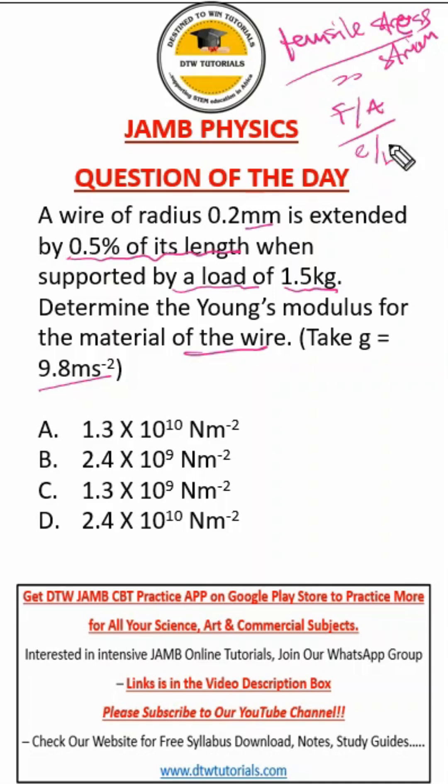So Young's modulus will be FL over AE. That's the formula for your Young's modulus. Please remember to go on the Telegram group and download freely your 135 JAMB physics formulas for all your topics.